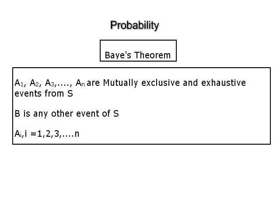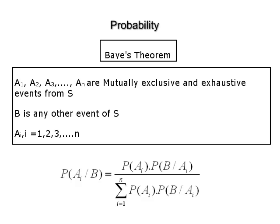Bayes' theorem. If A1, A2, A3, ... An are N mutually exclusive and exhaustive events from the sample space S, B is any other event of S, and if the probabilities of occurrence of Ai's and the probability of occurrence of B given that Ai (i = 1, 2, 3, ... N) has occurred are known, then the probability of occurrence of Ai given that B has occurred is given by P(Ai|B) = [P(Ai) × P(B|Ai)] / [Σ P(Ai) × P(B|Ai)], where i goes from 1 to N.